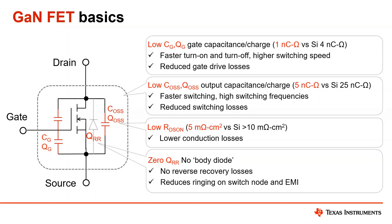Lastly, due to GAN's unique device structure, there's no inherent body diode. No body diode means no reverse recovery losses when switching, and it reduces the amount of ringing on your switch node and can help with a number of EMI challenges.